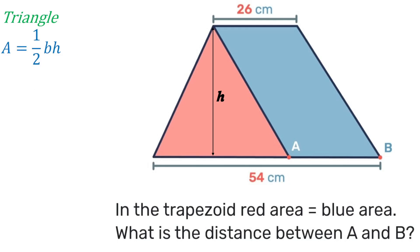But what is the base in this case? The base is not 54. The base is actually 54 minus AB. Let's hold on to that for a moment.